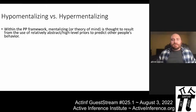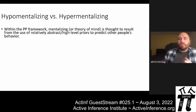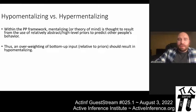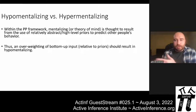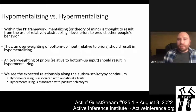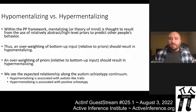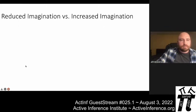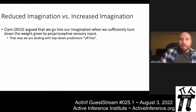Within the predictive processing framework, mentalizing or theory of mind is thought to result from the use of relatively abstract, high-level predictions to predict other people's behavior. If that's the case, overweighting bottom-up input relative to priors should result in hypomentalizing — reduced attribution of mental states to others — while overweighting priors should result in hypermentalizing, or increased attribution of mental states. That is what we find associated with the autism-schizotypy continuum. This was discussed in the van de Croix 2014 paper, and the opposite pattern holds for positive schizotypy.